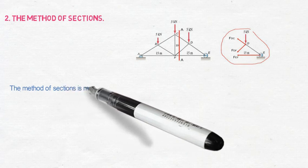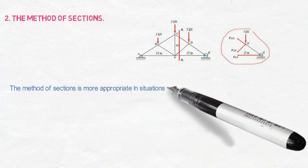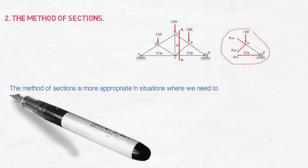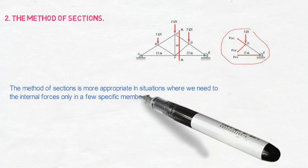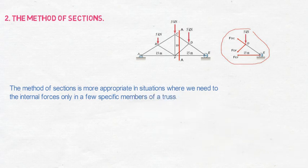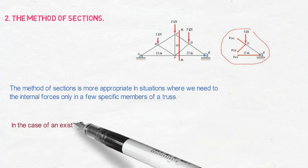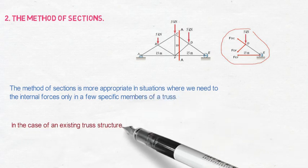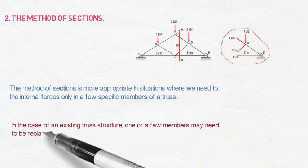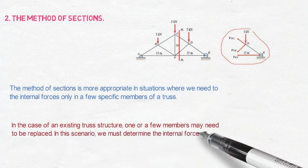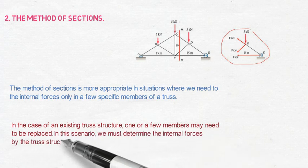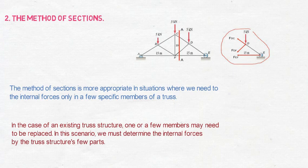Second, the method of sections. The method of sections is more appropriate in situations where we need to find the internal forces only in a few specific members of a truss. In the case of an existing truss structure, one or a few members may need to be replaced; in this scenario, we must determine the internal forces carried by those specific members.